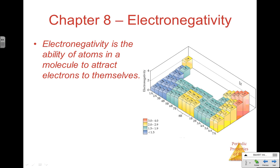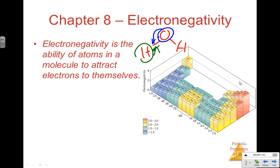To finish our notes, I also want to bring up one other trend: electronegativity. We'll get heavily into electronegativity in Chapter 8, but it makes sense here because it's another predictable trend on the periodic table — and it's an idea you've seen before. Electronegativity is the ability of an atom in a molecule to attract electrons to itself. When we look at a water molecule with hydrogens bonded to oxygens, electronegativity is how strongly hydrogen holds on to those electrons in the bond versus how strongly oxygen holds on. It's a rating of how strong the nucleus of one atom holds on to electrons in a covalent bond.